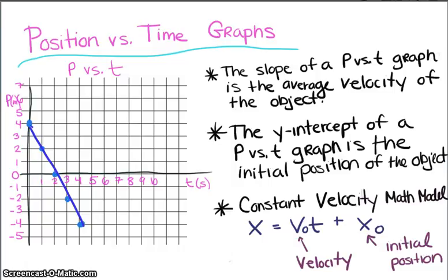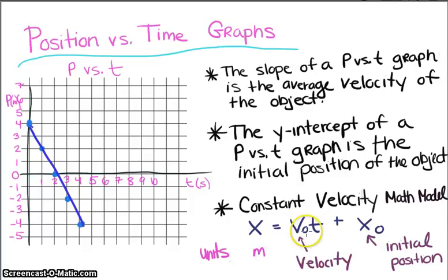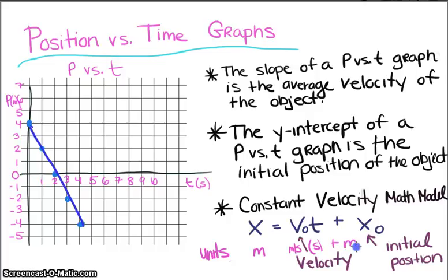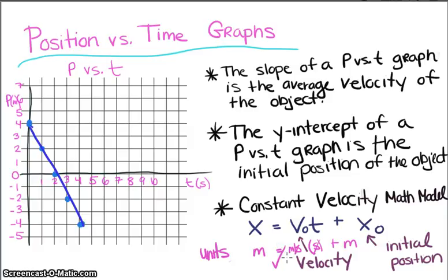Something I like to do with a new math model is test the units to make sure everything makes sense. Position will be in meters, velocity in meters per second, time in seconds, and x_initial in meters. The left side of the equation has meters, so the right side should also give meters. Checking: meters per second times seconds — the seconds cancel, leaving meters, plus meters. The units check out.